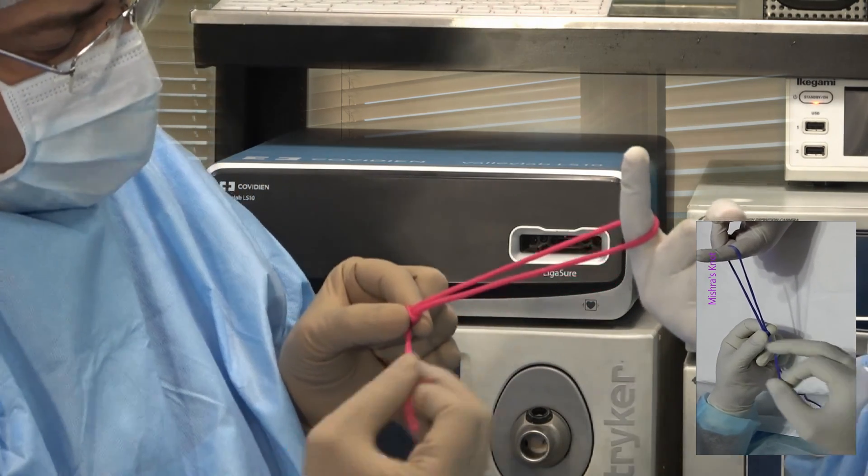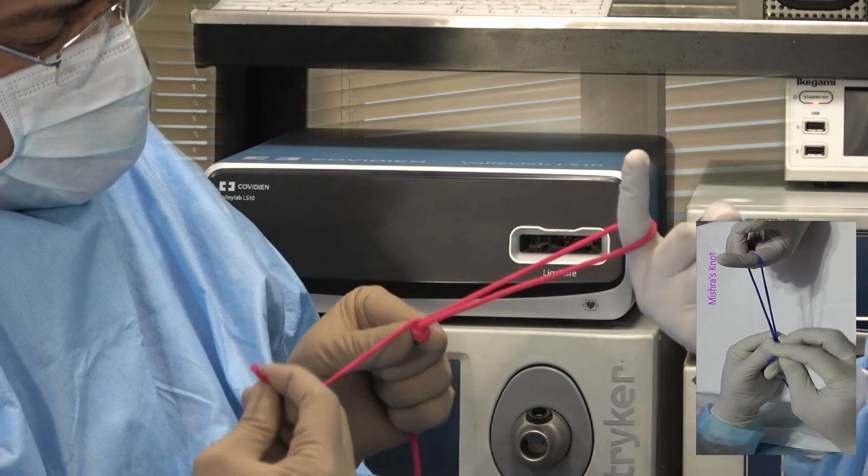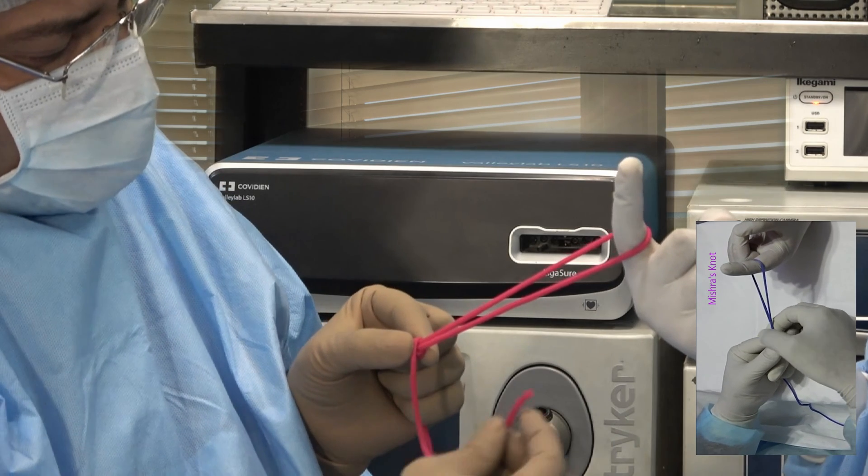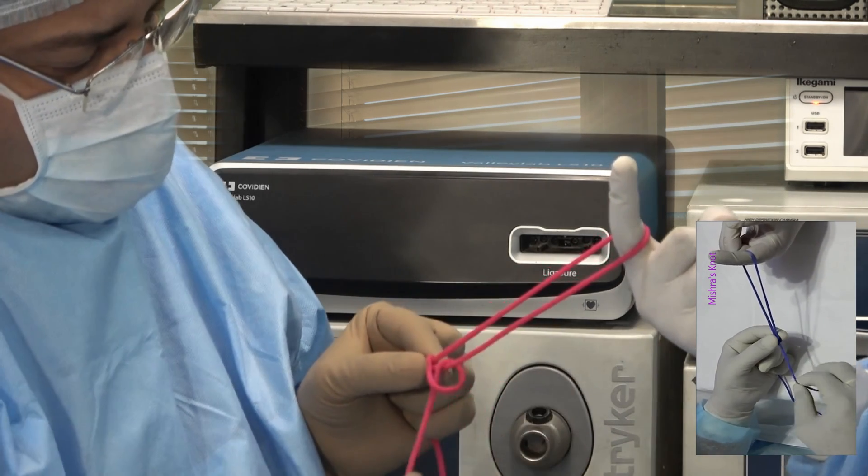After locking, you will take a second wind. This is the second wind and again this also will be locked. One half knot will be taken and this is locked.